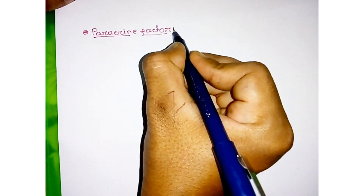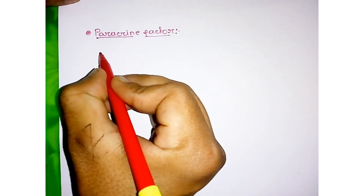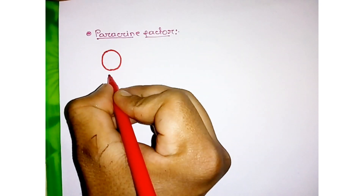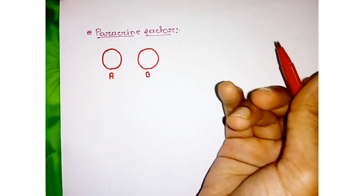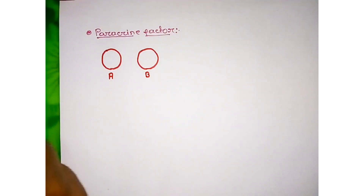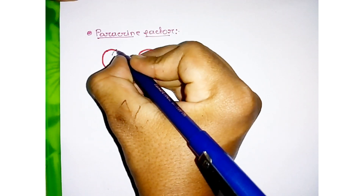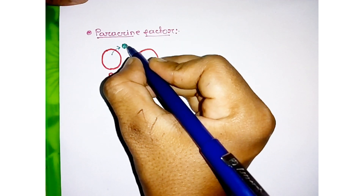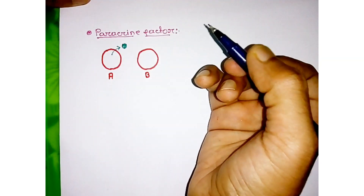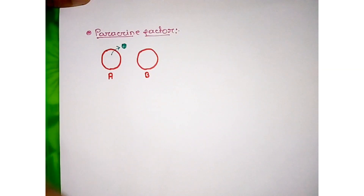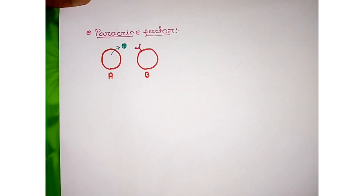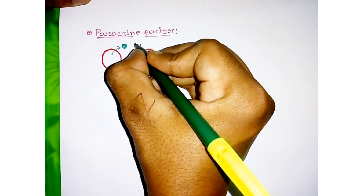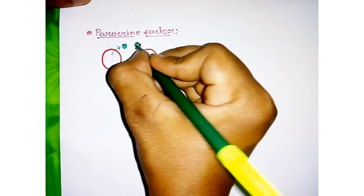What is paracrine factor? Suppose this is a cell, the name of the cell A, and this is another cell that is B. This A cell produces a signal. This signal is a protein. It acts as a ligand and binds with the specific receptor that is present on the other cell. This B cell contains a receptor, and the signal produced by cell A binds with that particular receptor present on the adjacent cell and exerts some effect.